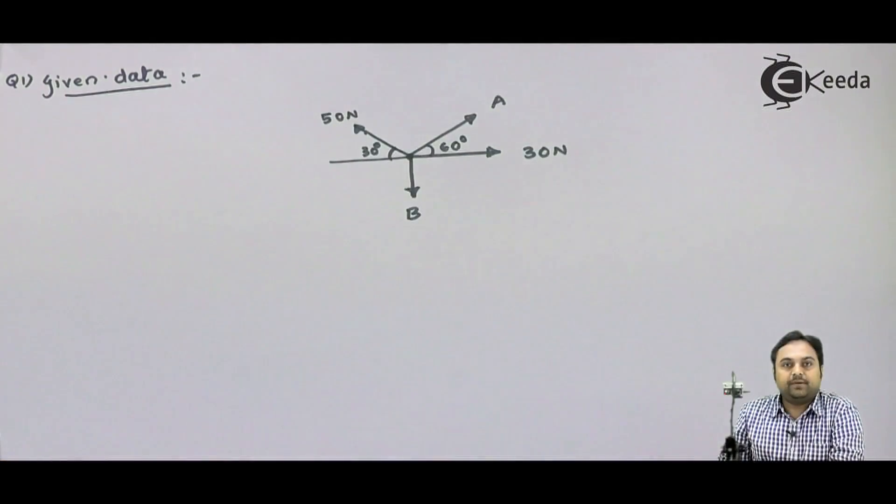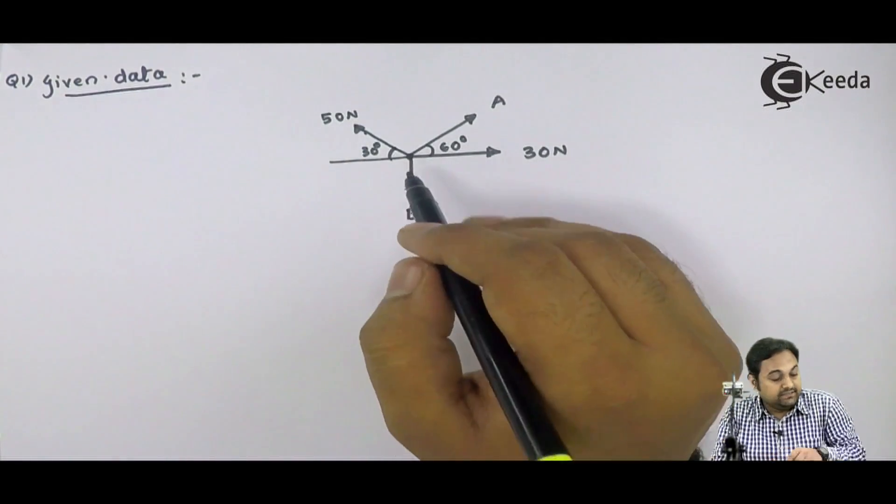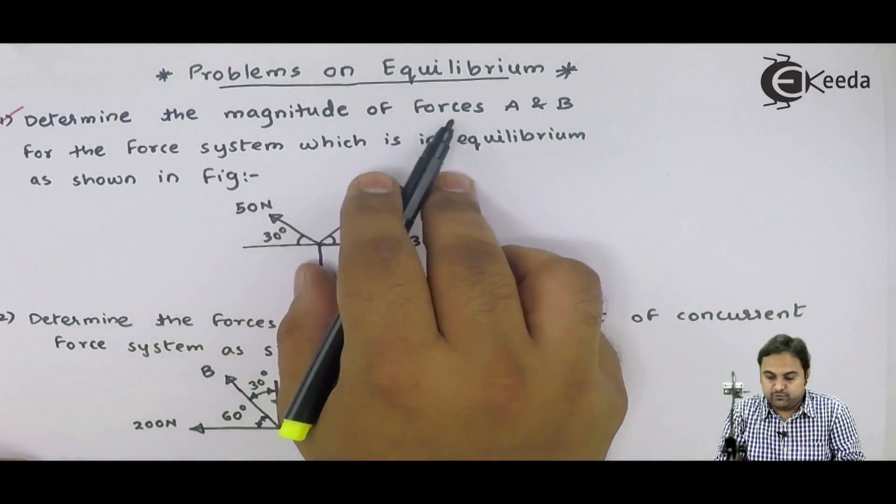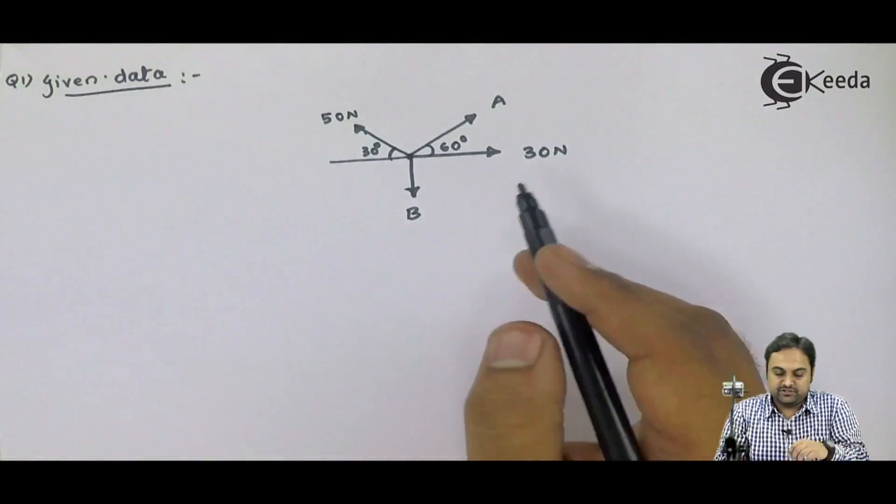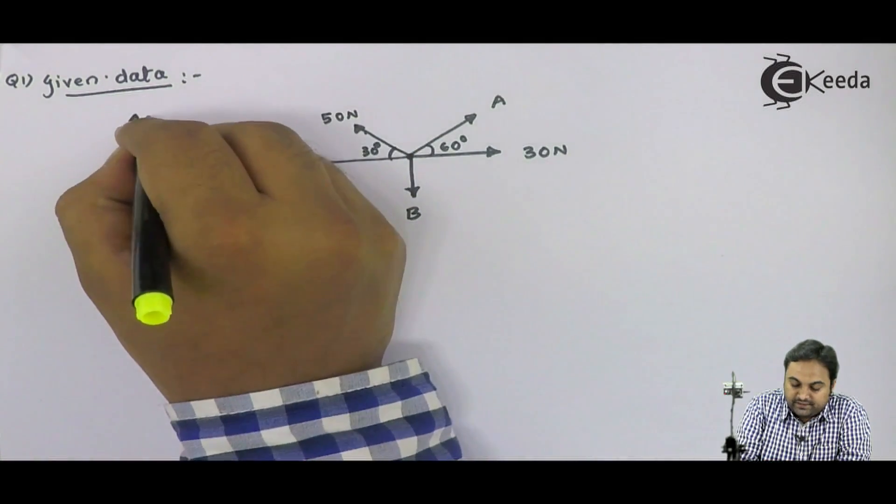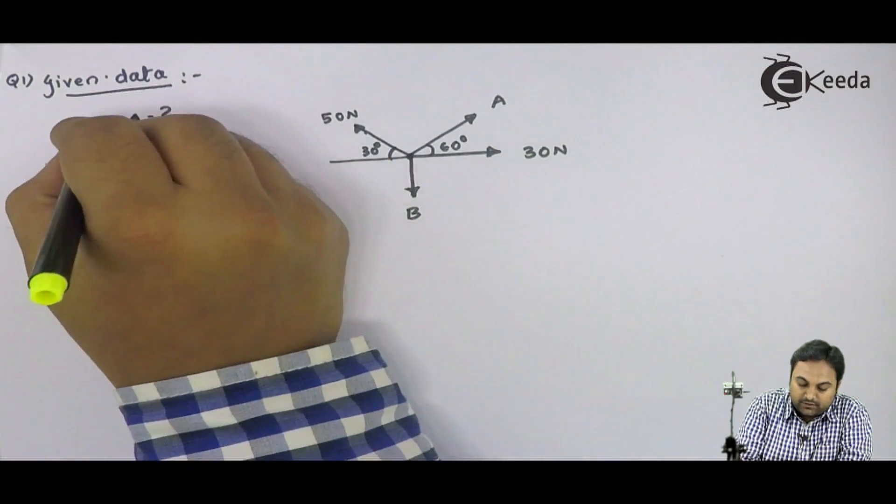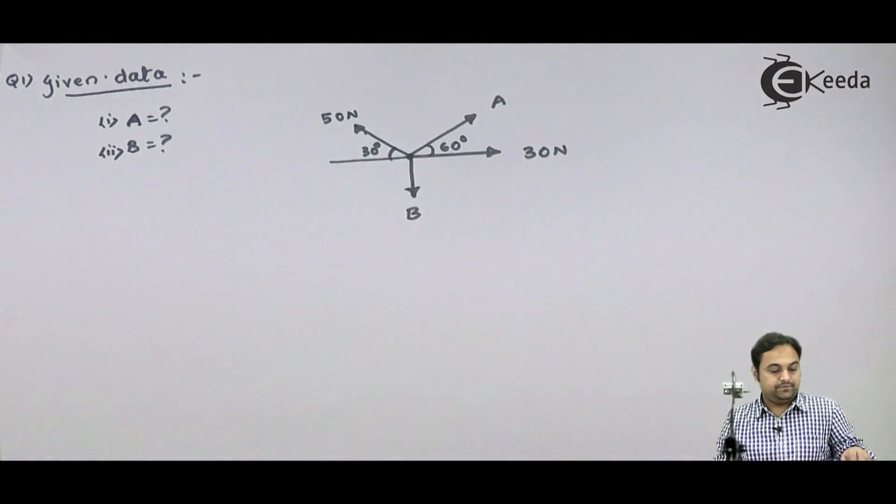This is the diagram which is given. Here we have a concurrent force system and it is said in the question determine the magnitude of forces A and B. We have to find the value of these two unknown forces. What is the value of A? And what is the value of B? These are my questions 1 and 2.